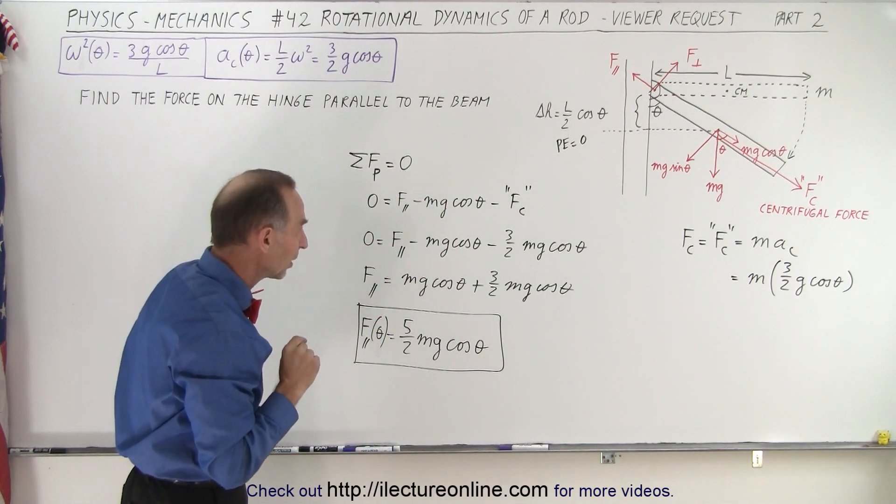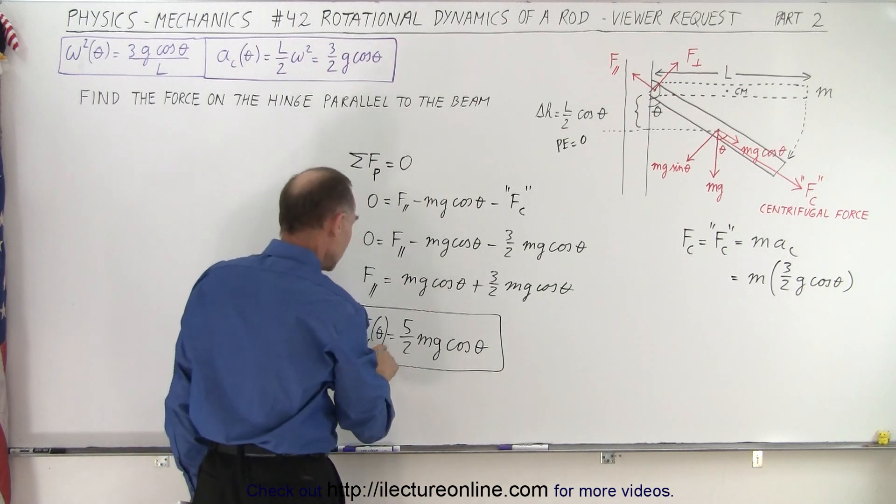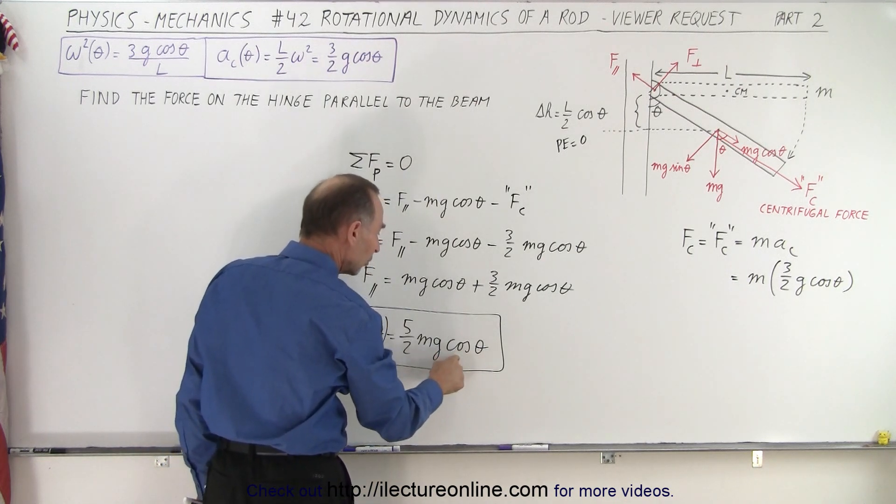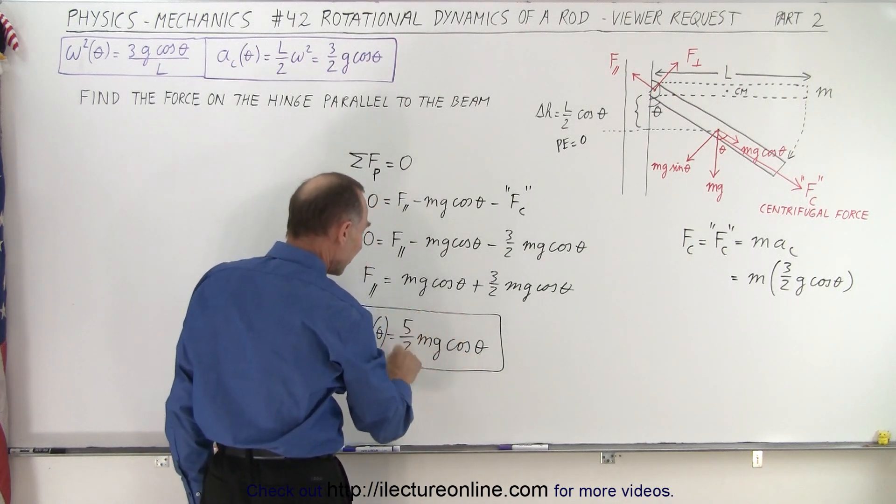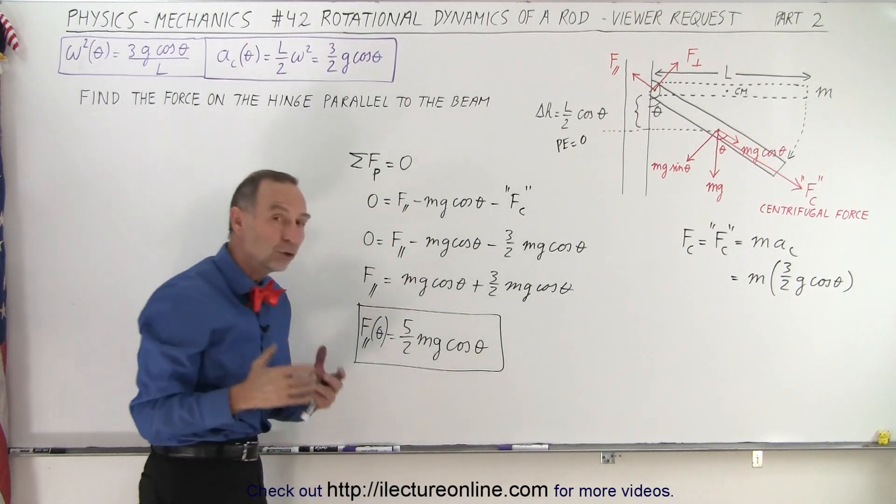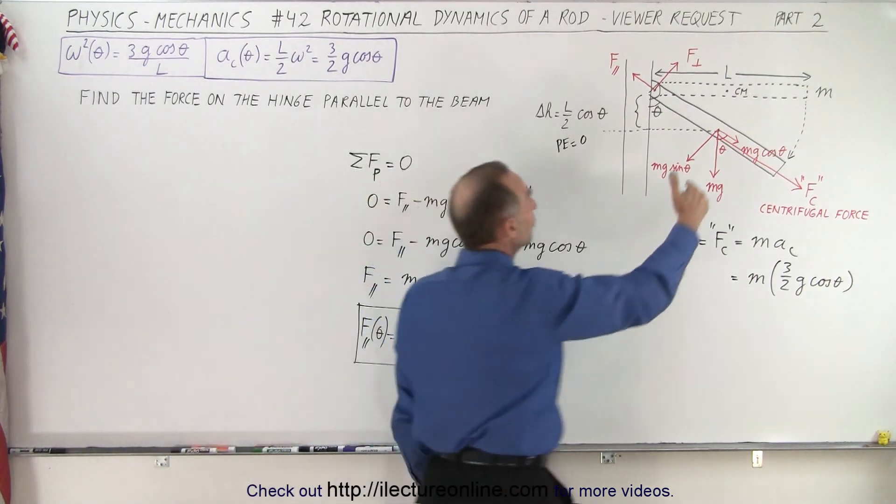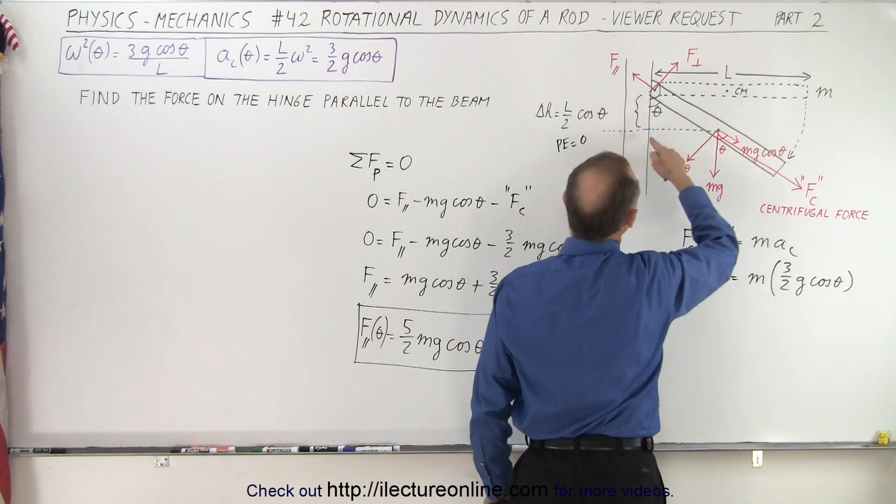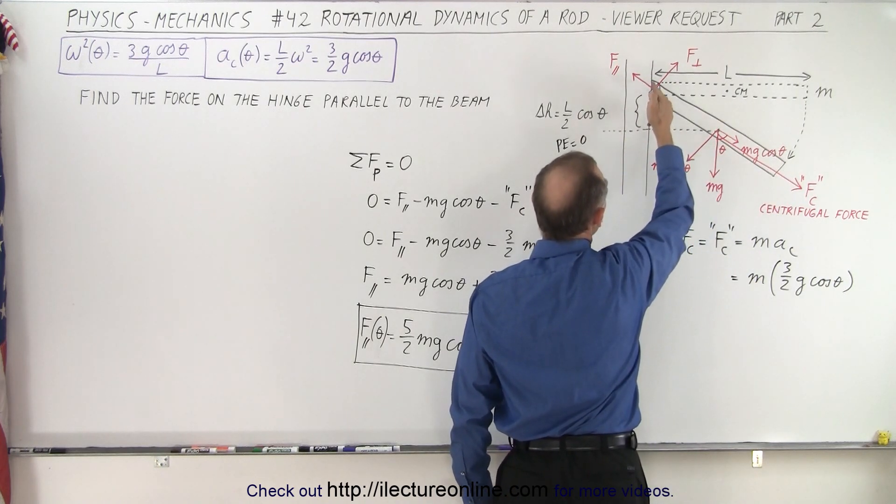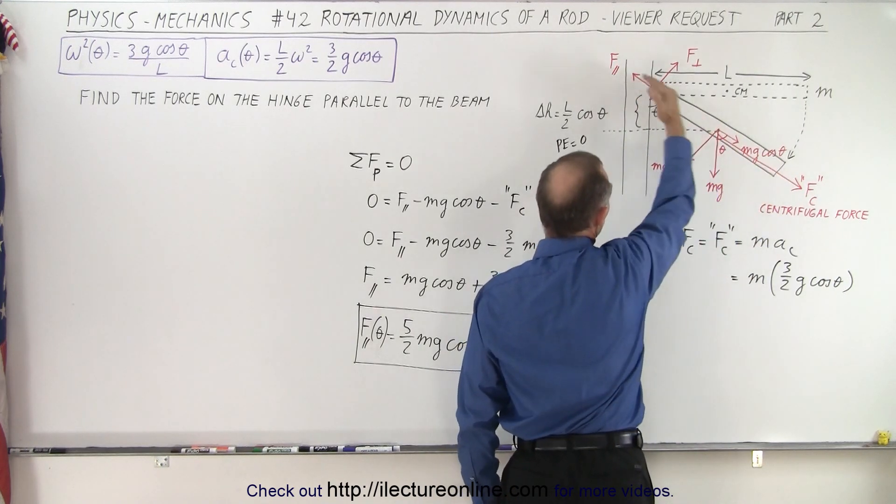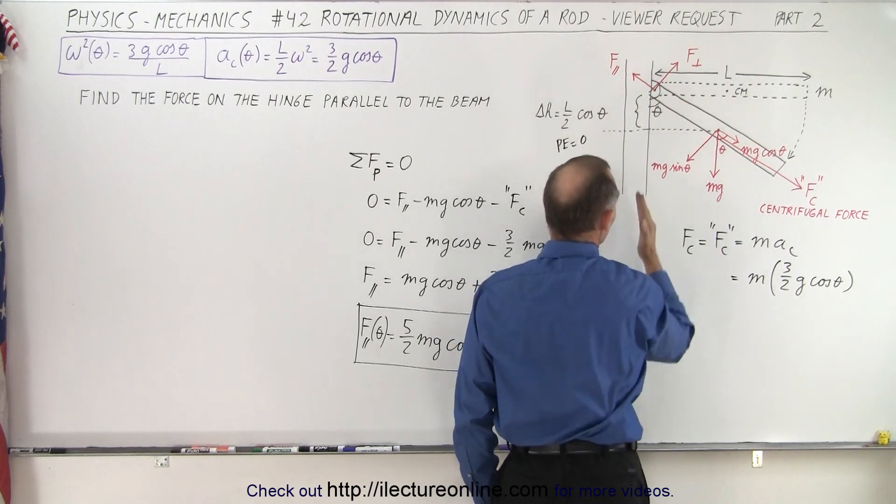So what happens there is, when the angle is zero degrees, cosine of zero is one, it'll be five halves mg. So about two and a half times the weight of the beam will be acting on the pin in the direction parallel to the beam when the beam is in a vertical position.